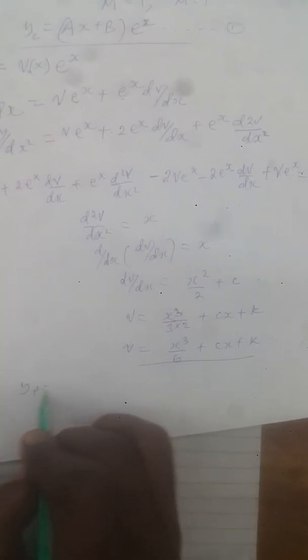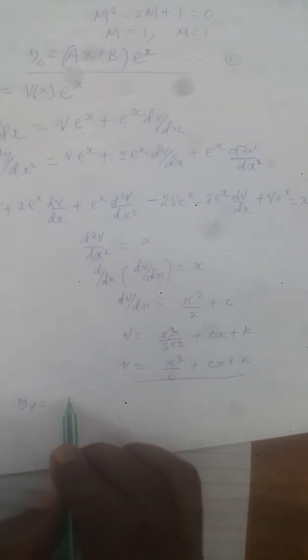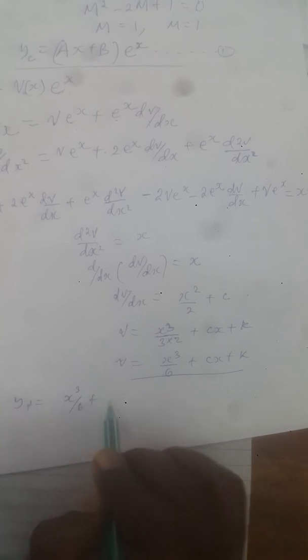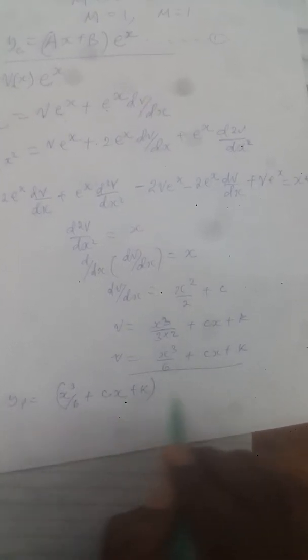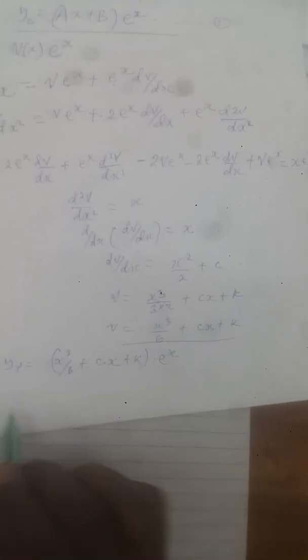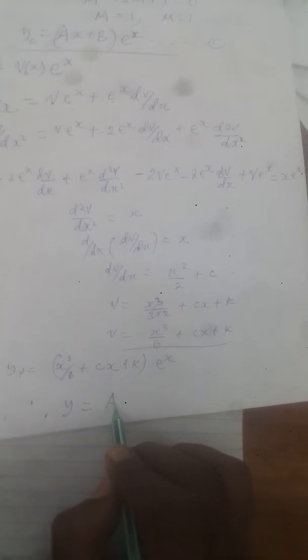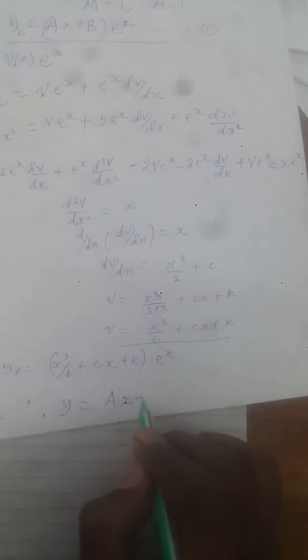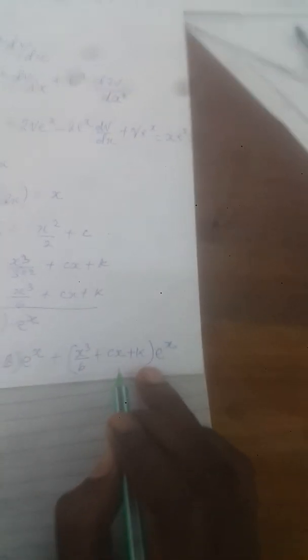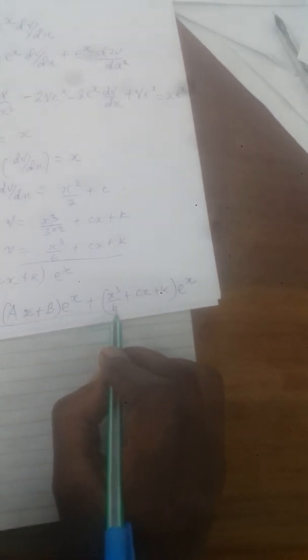The particular solution is y_p = v·e^x = (x³/6 + cx + k)e^x. Therefore, the general solution is y = (ax + b)e^x + (x³/6 + cx + k)e^x, which is the complete general solution of the given differential equation.